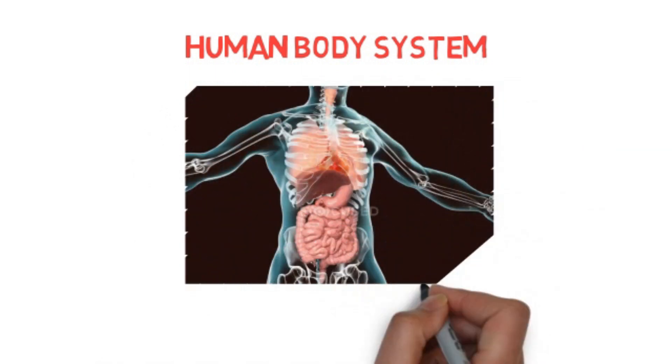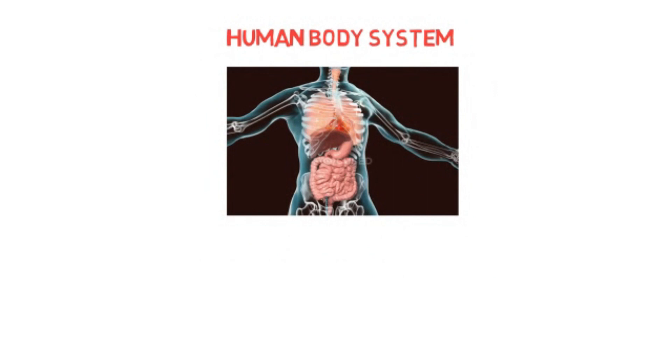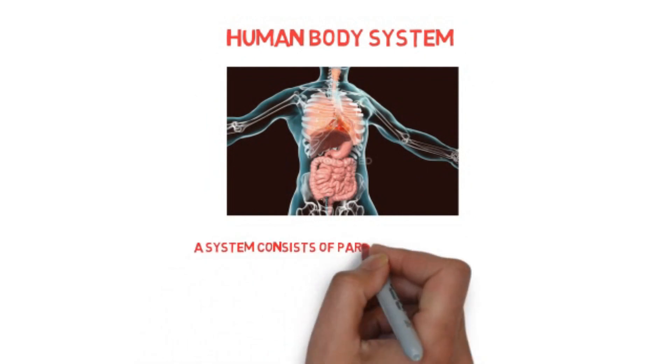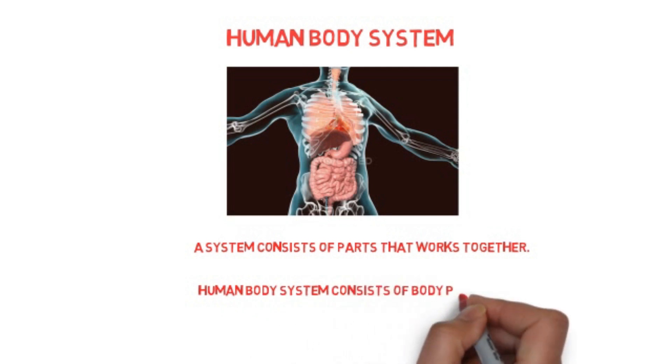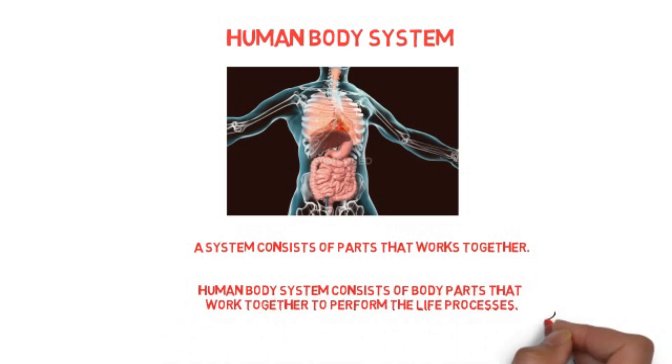Now let's be clear with the definition of system. A system consists of parts that work together. Human body system consists of body parts that work together to perform the life processes.